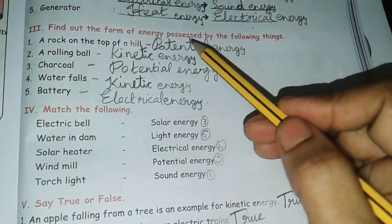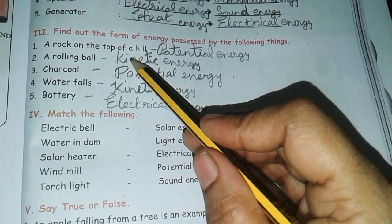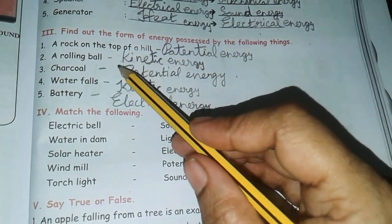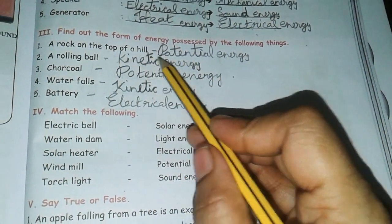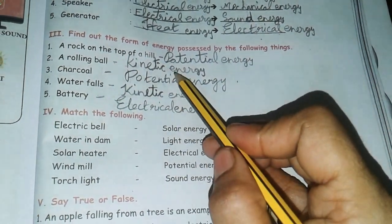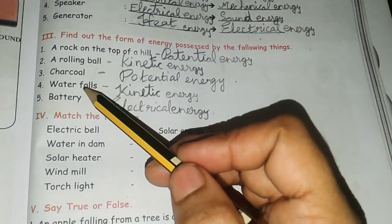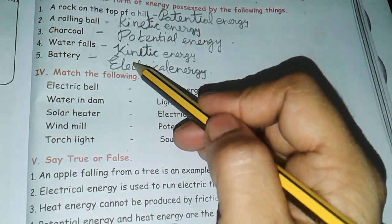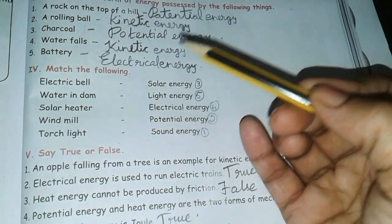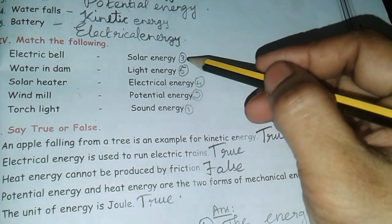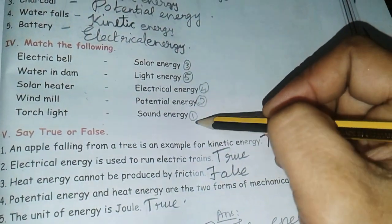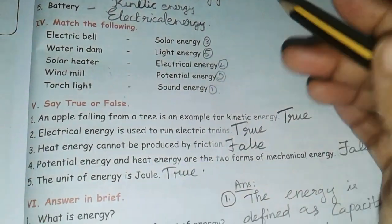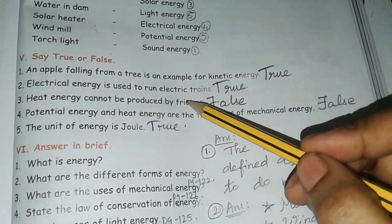Third roman numeral - find out the form of energy possessed in the following. A rock on top of a hill: potential energy. A rolling ball: kinetic energy. Charcoal: potential energy. Waterfalls: kinetic energy. Battery: electrical energy. Then match the following: solar energy 3, light energy 5, electrical energy 4, potential energy 2, sound energy 1.